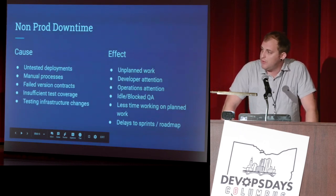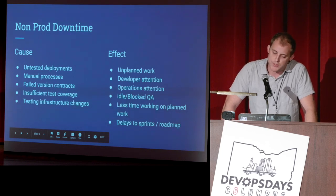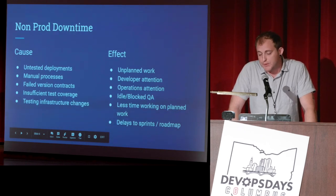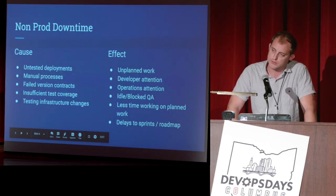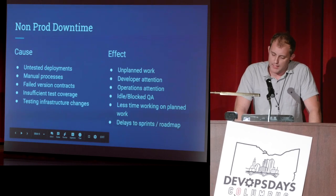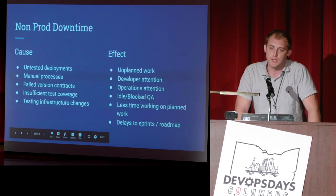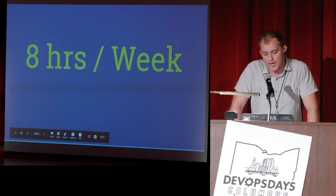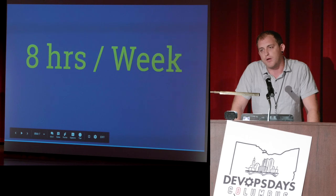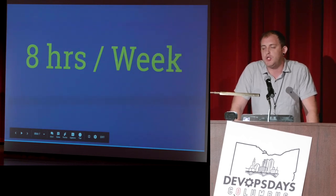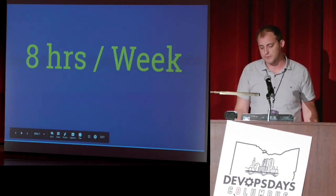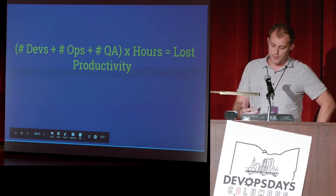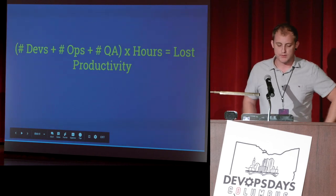The effect that downtime in a non-prod environment has is a lot of unplanned work. You sometimes need a developer's attention, you need operations attention, and then you've got idle and blocked QA developers. That means less time working on new features and more time just fixing stuff, which puts delays on sprints and the roadmap, causing upper management and product managers some issues.